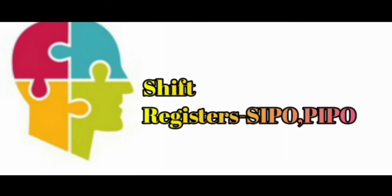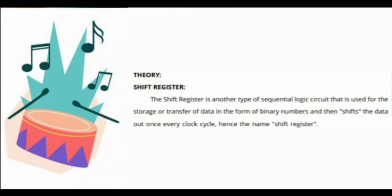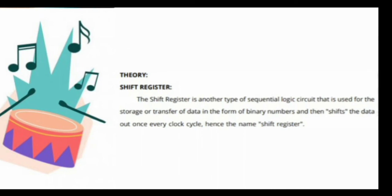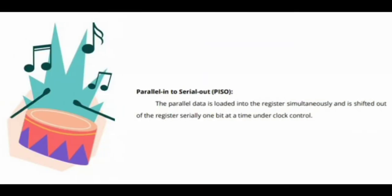Shift registers: serial in parallel out, parallel in parallel out shift register. The shift register is another type of sequential logic circuit that is used for the storage or transfer of data in the form of binary numbers and then shifts the data out once every clock cycle, hence the name shift register.